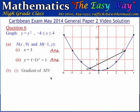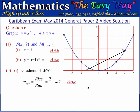Part B wants us to find the gradient of the line MN. The gradient of a line is given by the rise divided by the run from one point on the line to another. Observing these two points on the line, the rise is 2 units and the run is 1 unit. Therefore the gradient of the line MN is 2 divided by 1, which equals 2.